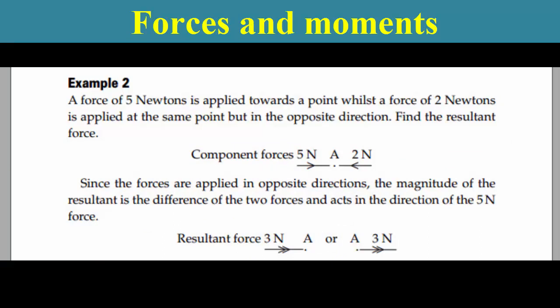Example 2: A force of 5 Newtons is applied toward the point, whilst a force of 2 Newtons is applied at the same point but in the opposite direction. Find the resultant force. Since the forces are applied in opposite directions, the magnitude of the resultant is the difference of the two forces and acts in the direction of the 5N force.